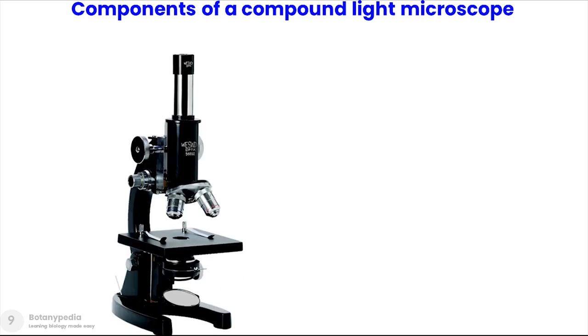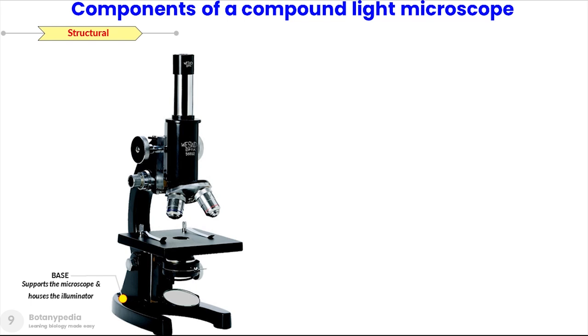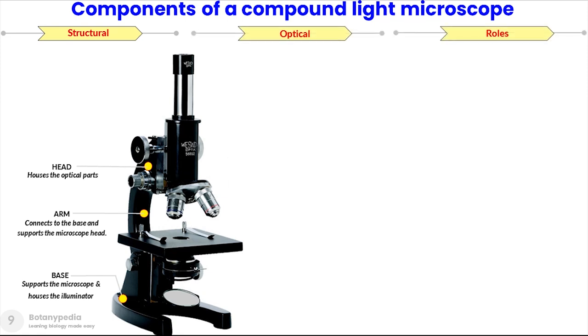Now we will look at the various components of a compound light microscope. The components can be categorized in two ways: structural components and optical components. The structural components include the base, which supports the microscope and houses the illuminator; the arm, which connects to the base and supports the microscope head; and the head, which houses most of the optical parts.